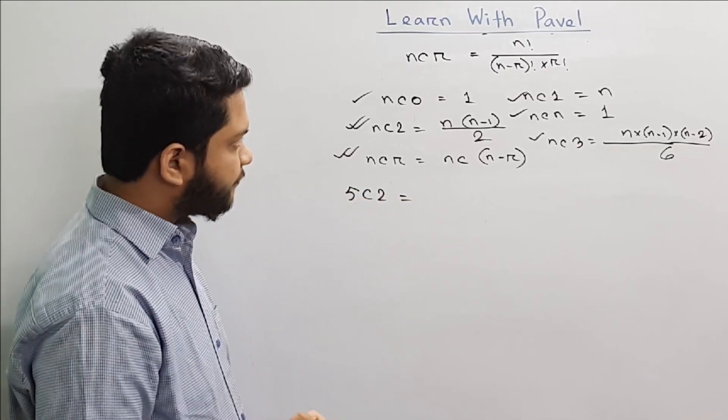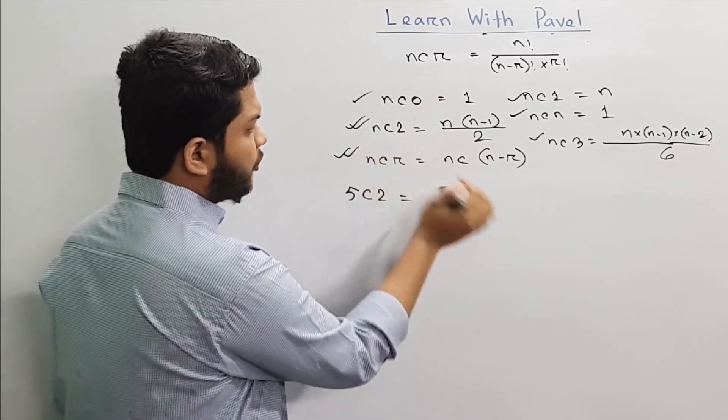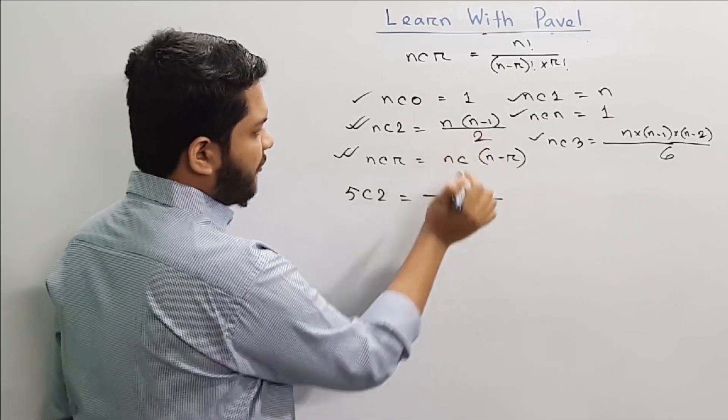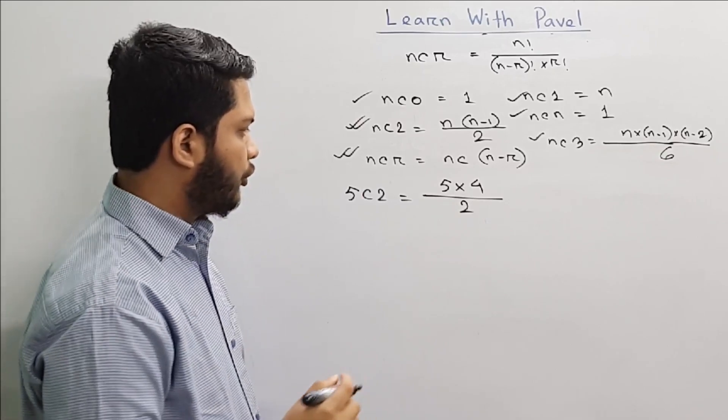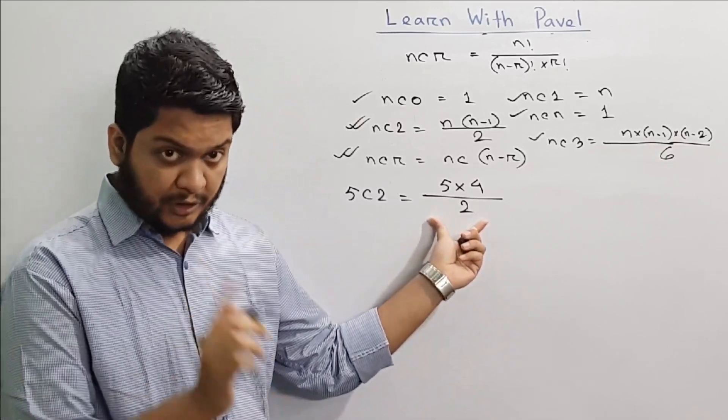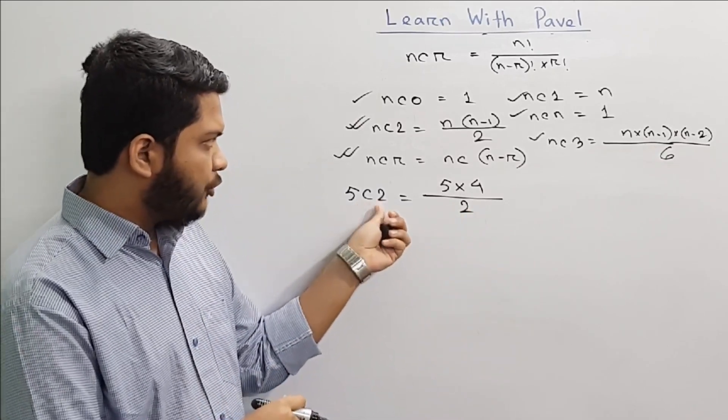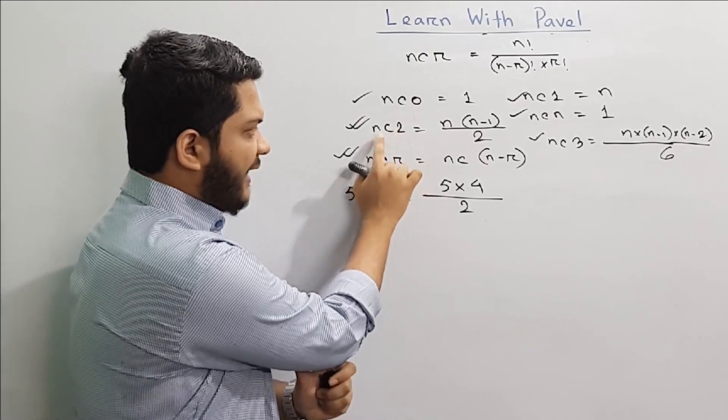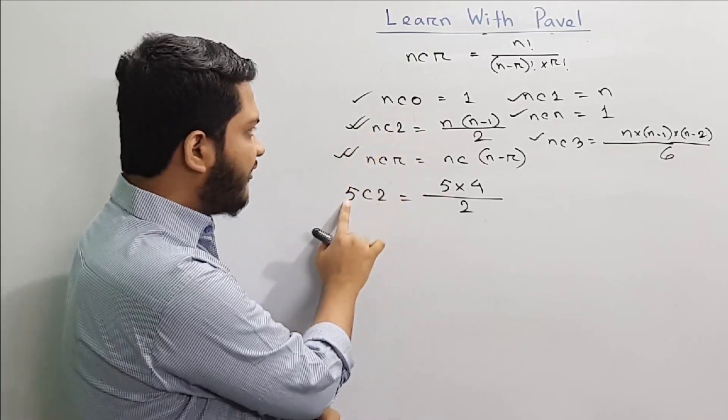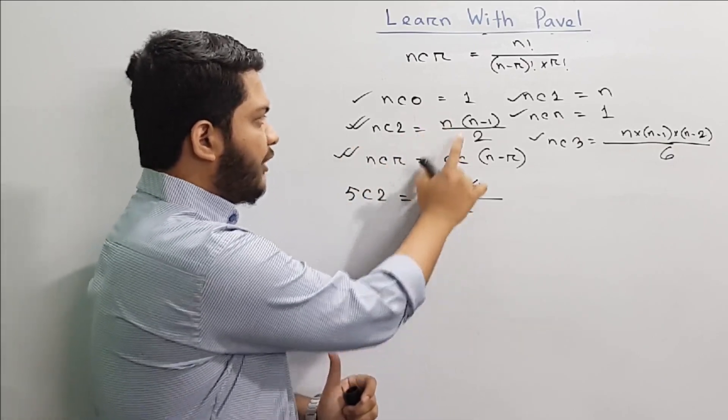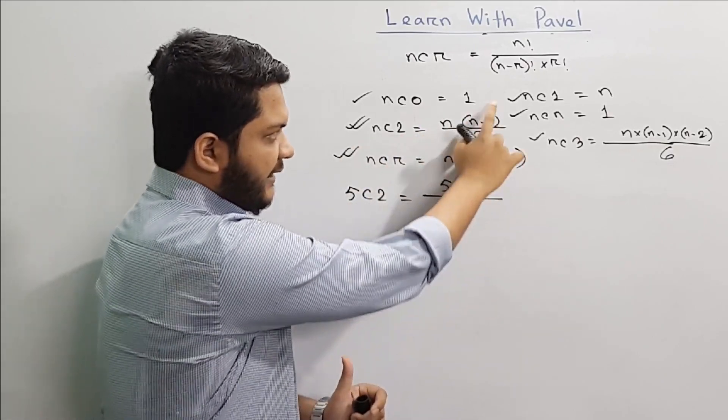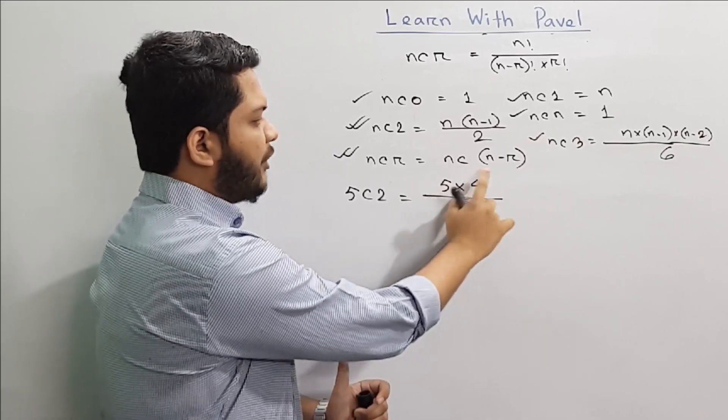5C2. We will start with 5C2. 5 and back it out of C3. Then nCr into n-1. So, 5 into 4.